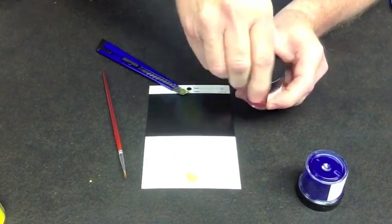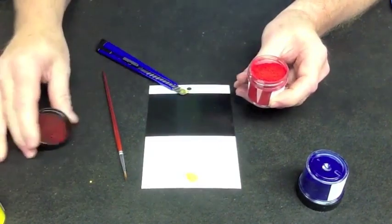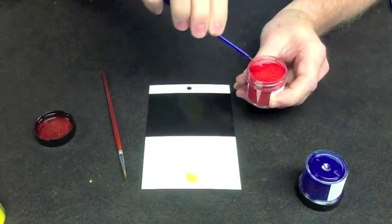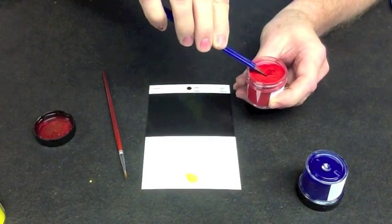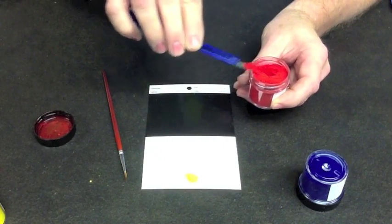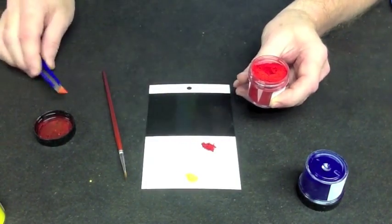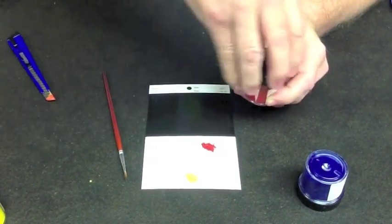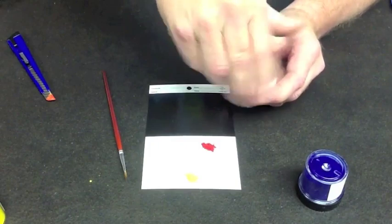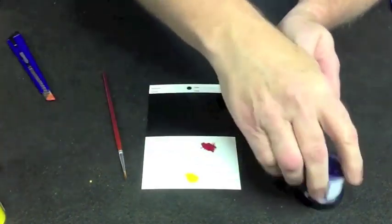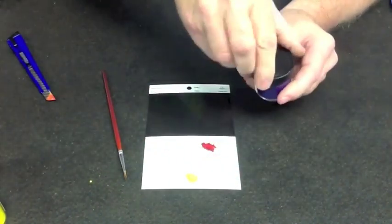I always like to tap the lid of that jar as I'm unscrewing it to knock off any. Red is a very powerful color. All these primaries are very strong powerful colors. We have our yellow and our red and now we're going to put a little bit of blue out.